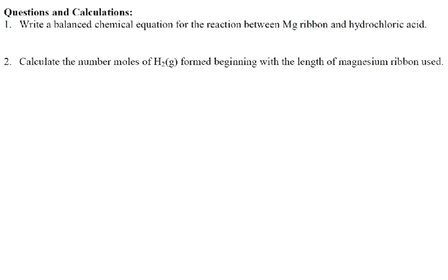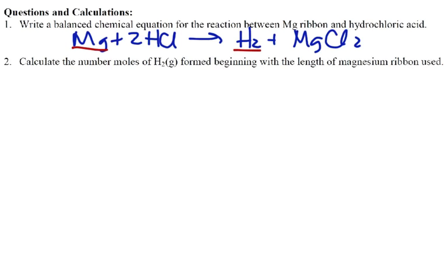First one here says, write a balanced equation, a chemical equation. Well, we've done this a lot. So we know that magnesium plus 2 hydrochloric acid turns into hydrogen gas and magnesium chloride. And the reason we want this is for the heart of the problem, which says that for every one mole of magnesium, we get one mole of hydrogen.